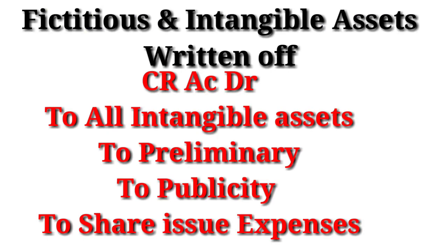Fictitious and intangible assets are the heart of this chapter. The entry is: Capital Reduction Account debit to all intangible assets — goodwill, patents, copyrights. Also included are preliminary expenses, miscellaneous expenses, share issue expenses, and publicity campaign expenses. All these are written off by crediting them and debiting Capital Reduction.